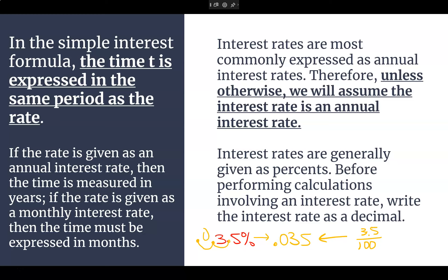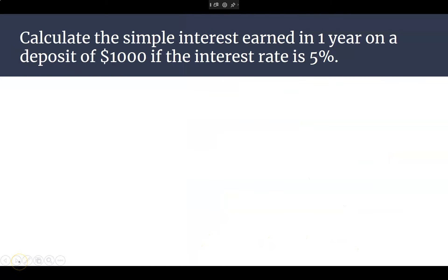Ready to do some? Calculate the simple interest earned in one year on a deposit of $1,000 if the interest rate is 5%. So the formula we just figured out is PRT, right? So I need those three pieces of information. Do I know my principal? What is it? 1,000. There you go.